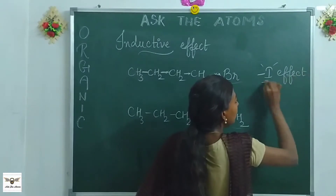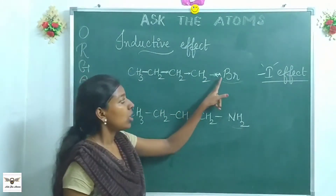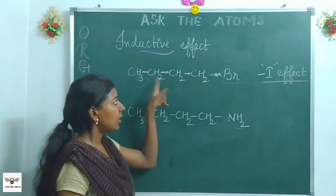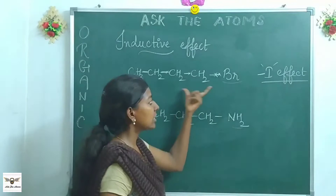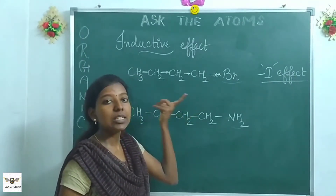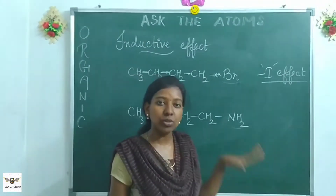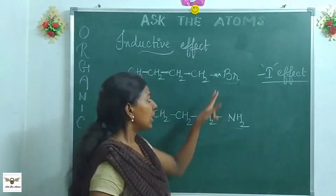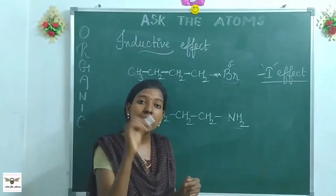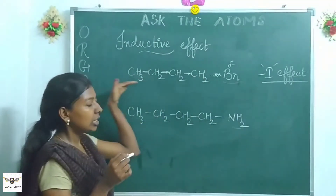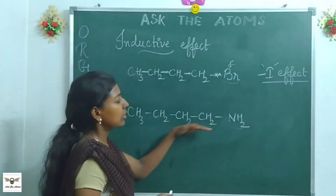The minus I effect is the pulling of electrons towards a particular functional group due to its electronegative ability. This effect is very strong closer to the atom and diminishes as you move farther away along the chain, so it is distance-dependent. It is also a permanent effect because the functional group is permanently attached to the chain. As a result, one end develops a slight partial negative charge and the other develops a partial positive charge, creating some polarity in the molecule.